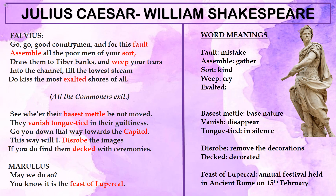Now Flavius also tries to rectify the wrong done by the commoners, but in a more tactful manner. In contrast to Marullus who insulted them, Flavius calls them 'good countrymen.' He tells them to gather all others roaming the streets and go to the bank of River Tiber, where they should weep so much that their tears fall into the river and raise its level — symbolically purging or rectifying their wrong.